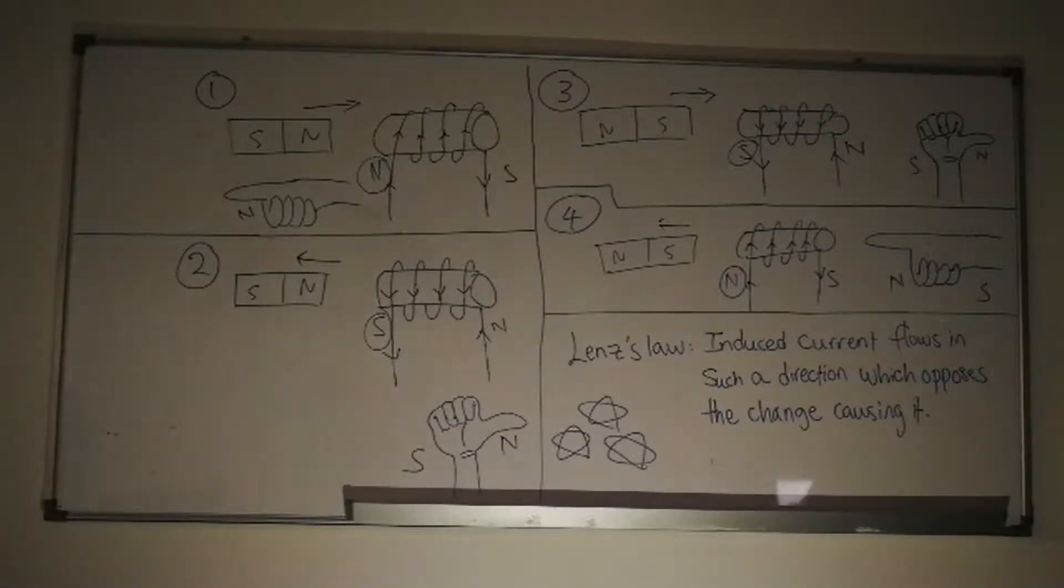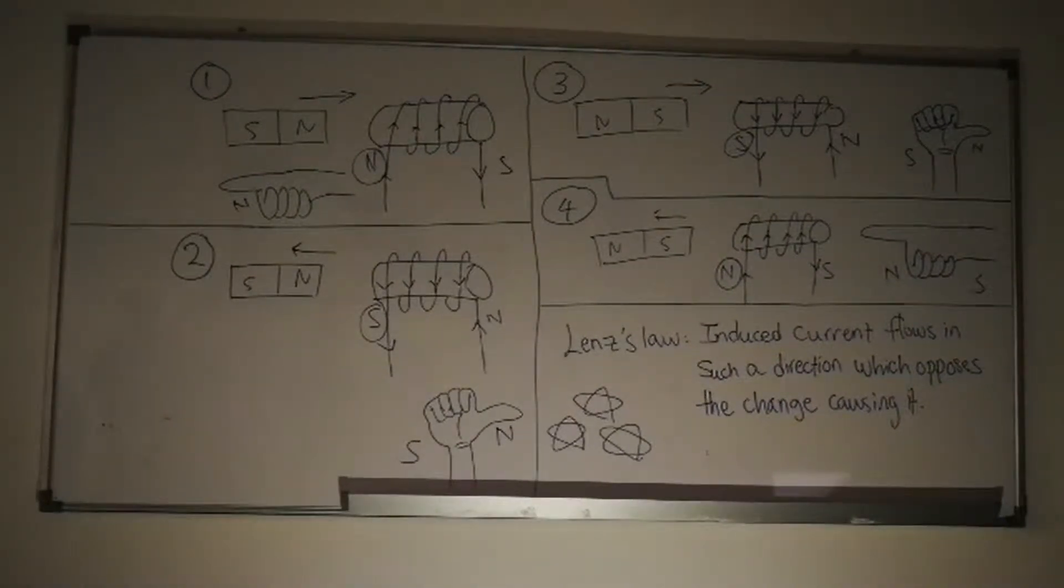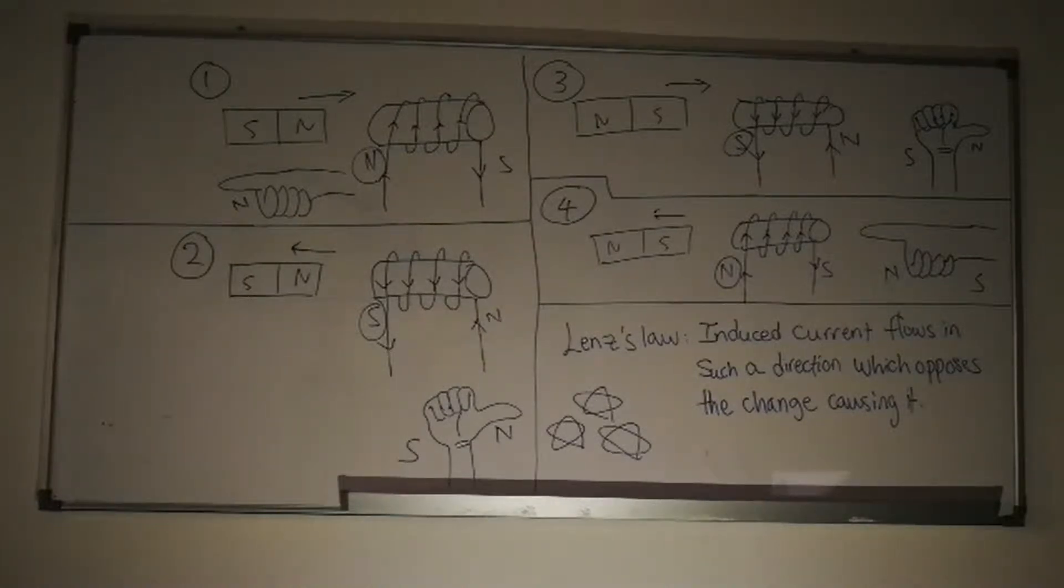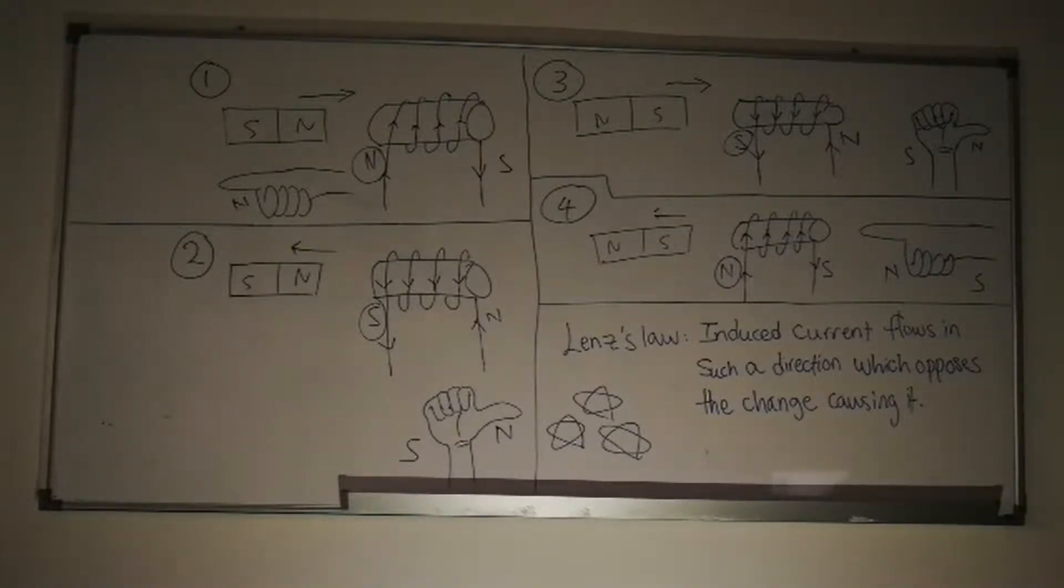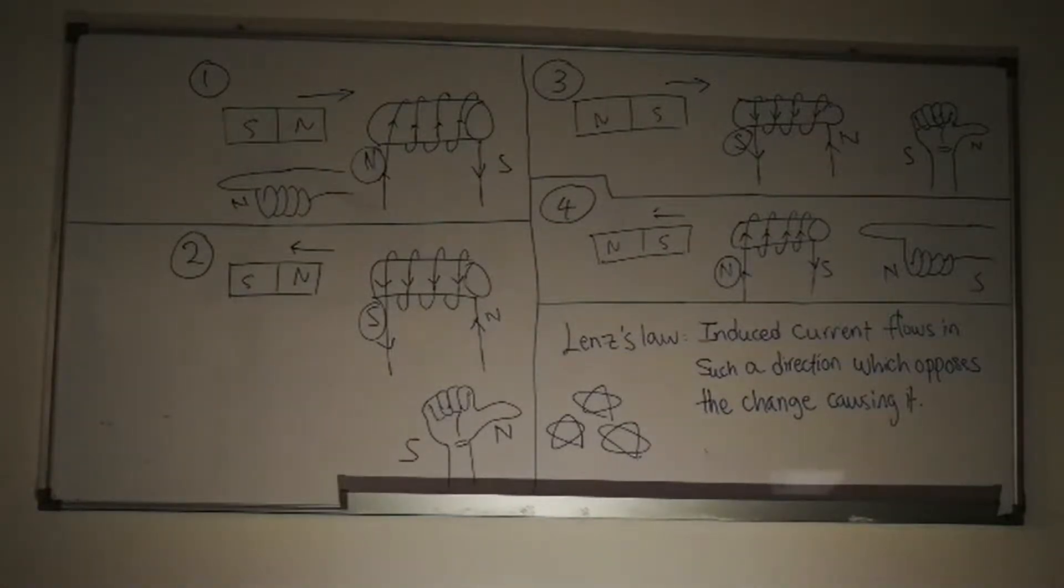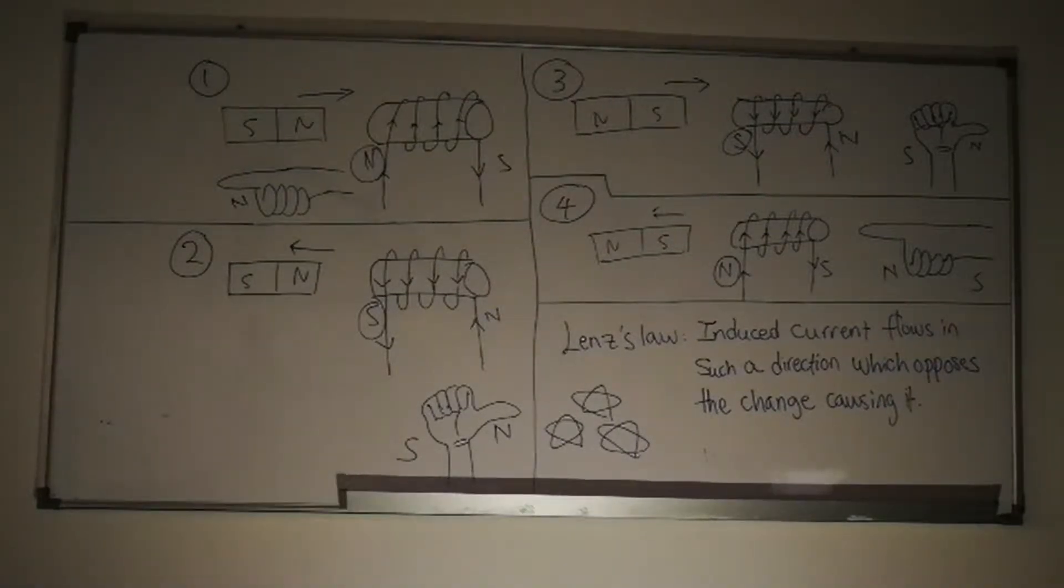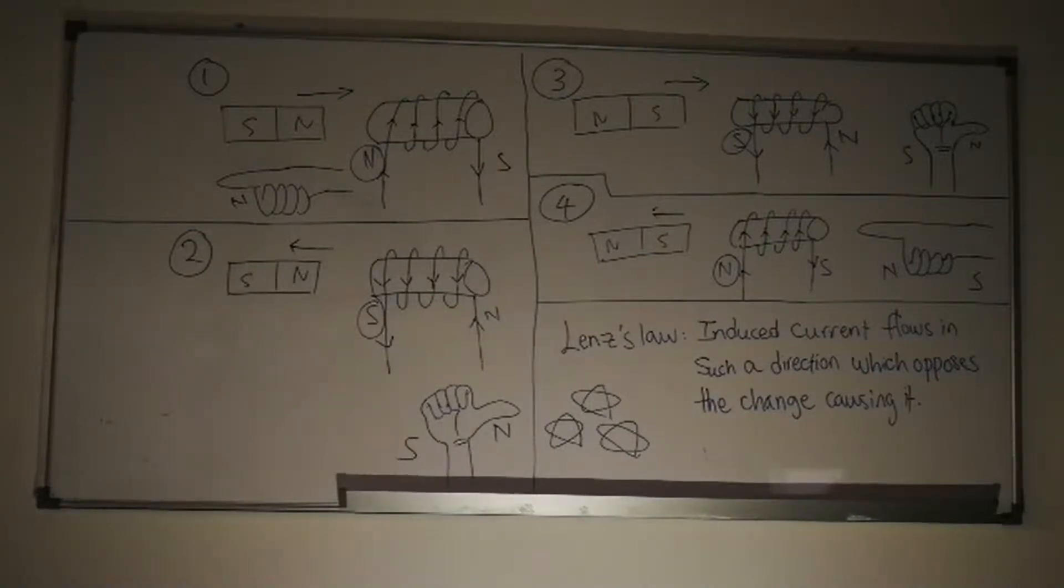I will show you the principle of Lenz's law using this diagram. According to Lenz's law, when a conductor experiences a change in magnetic flux, an induced current will be produced to generate its own magnetic flux, which opposes the changing magnetic flux. In the first diagram, the magnet is moved towards the solenoid. Based on Lenz's law, the induced current will flow in a direction that opposes the motion causing it. In order to oppose the motion, the left side of the solenoid will become a temporary north pole.